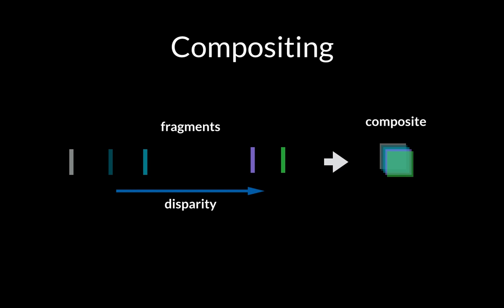Splatting input pixels according to our optical flow results in multiple splatted fragments for most output pixels, which must be composited into a single output color. This compositing must account for anti-aliasing and occlusion, and must blend smoothly across cameras and across time.